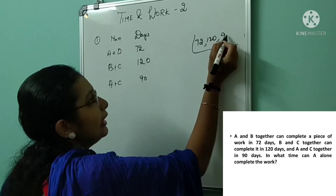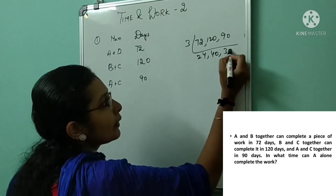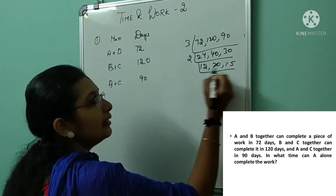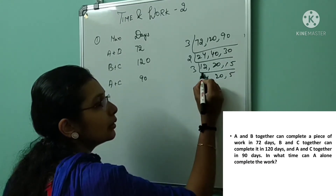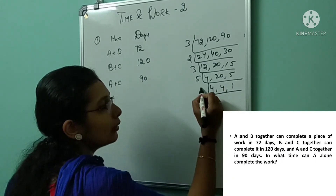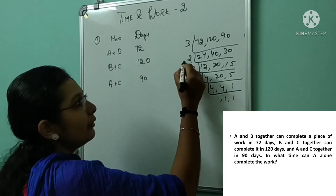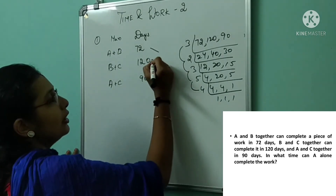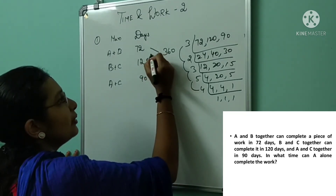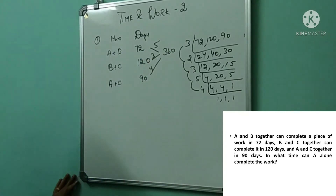Using the L division method with 72, 120, and 90, we get LCM = 360. So: 72 × 5 = 360, giving A+B's efficiency as 5; 120 × 3 = 360, giving B+C's efficiency as 3; and 90 × 4 = 360, giving A+C's efficiency as 4.